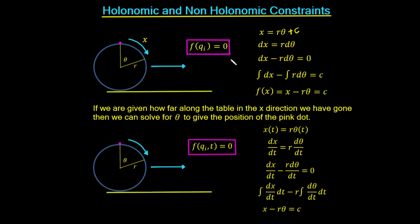More generally, if we replace x with our generalized coordinate qi, the main point is that taking our equation of constraint and integrating it gives us a function purely of position. Written generally, our holonomic equation of constraint is purely a function of the generalized coordinates qi.